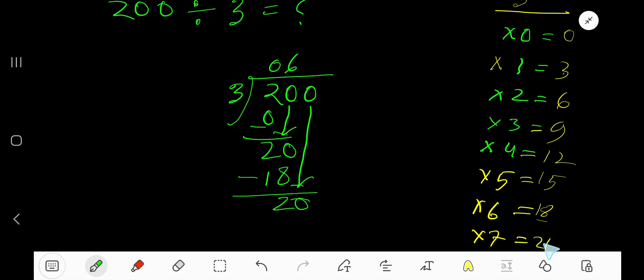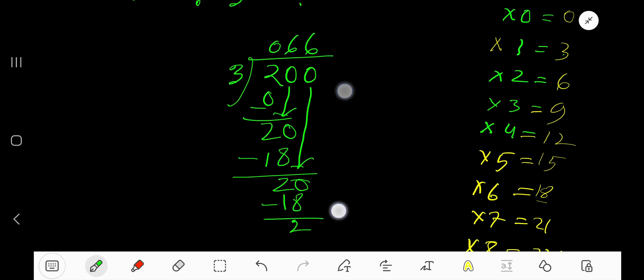3 goes into 20 how many times? 7 times is 21, so which is greater? 6 times. 6 times 3 is again 18. Subtract. We are getting 2. 2 is our remainder.